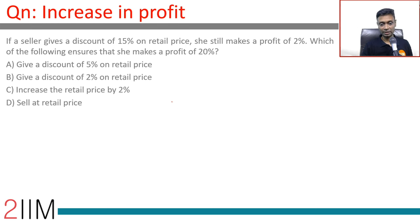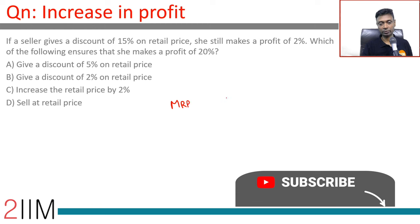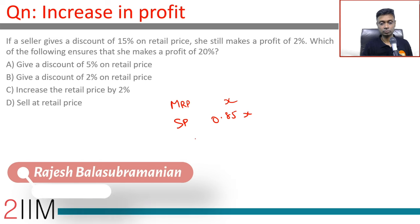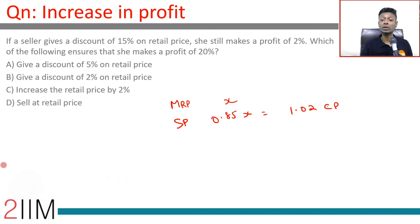So, there is mark price, if you say X, selling price is 0.85X. This is equal to 1.02 times cost price because she still makes a profit of 2%.